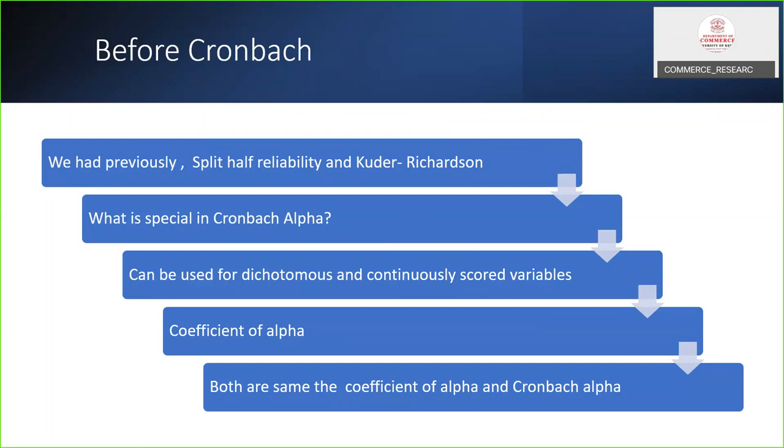We are looking at the coefficient of alpha scores. Some people are saying coefficient of alpha and some people are saying Cronbach alpha. The person who found this used coefficient of alpha, but we use Cronbach alpha because the credit should be given to the person who found the alpha score. Both are same, the coefficient of alpha and Cronbach alpha.